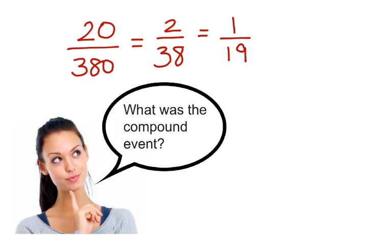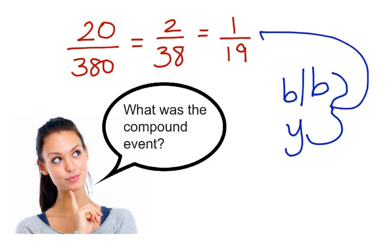What was the compound event? The compound event was the two events of drawing fish out of the aquarium. First, we wanted to draw out a blue and black fish. Then, we wanted to draw out a yellow fish. This was the compound event. And the probability of this compound event being successful is 1 out of 19.